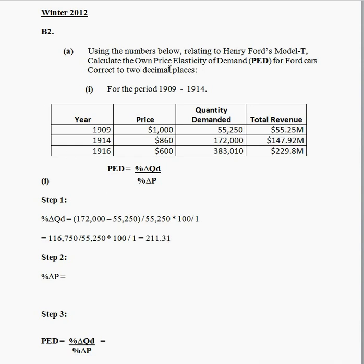The question clearly states we need to apply two decimal places, as done here. So what we know is that the quantity demanded of Henry Ford's Model T between 1909 and 1914 increased by over 200 percent.